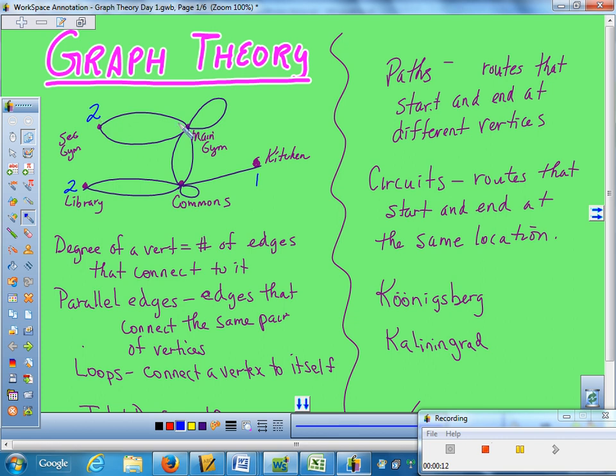Up here at the main gym, I would have one, two, three, four, five, six different edges that go in or out of that, so I would call that a degree of six. And the commons down here would have one, two, three, four, five, six, seven, so its degree would be seven. Those degrees are going to be important here shortly.